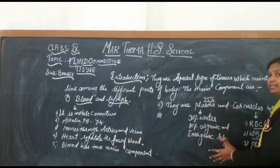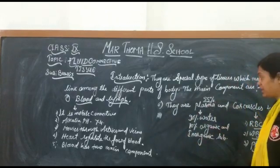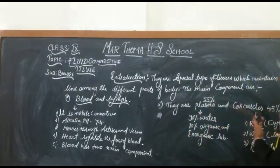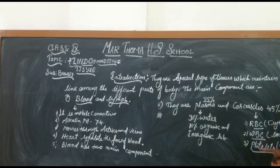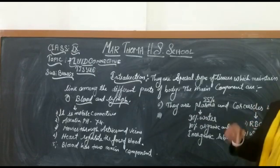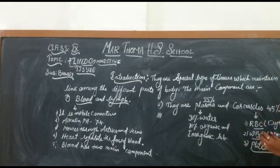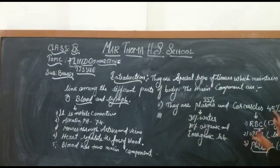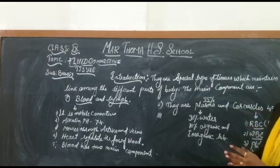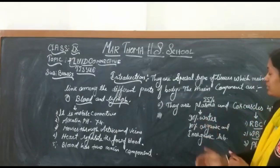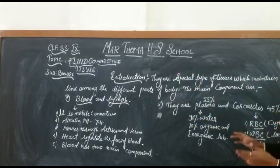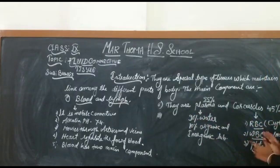The corpuscles include RBC, WBC, and platelets — these are all cells present in the blood. The other name of RBC is erythrocytes, WBC are known as leukocytes, and platelets are called thrombocytes.